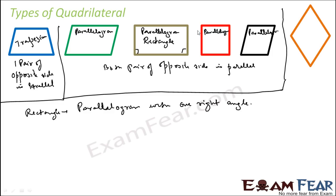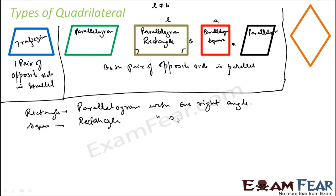In a rectangle, if you add the property that all sides are equal — it has length and breadth, and length is not equal to breadth. If you make all the sides equal, then it is called a square. The definition of square is a rectangle with all sides equal. By definition, a square is also a rectangle, because a rectangle is a parallelogram with one right angle, and a square is a parallelogram with one right angle and all sides equal.